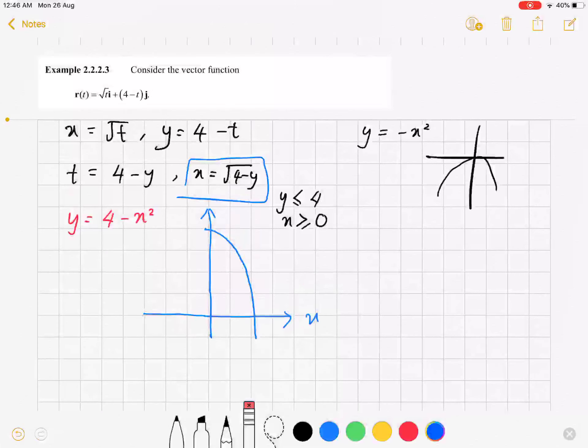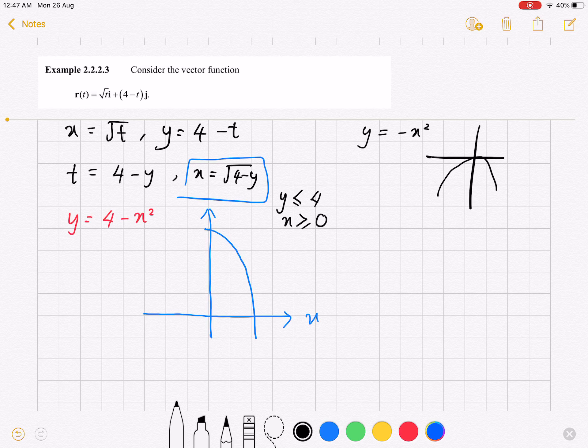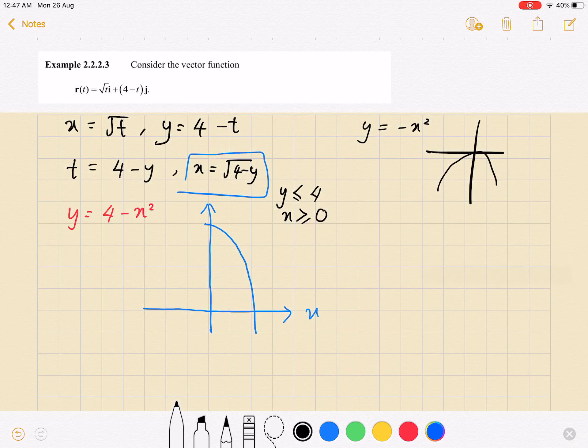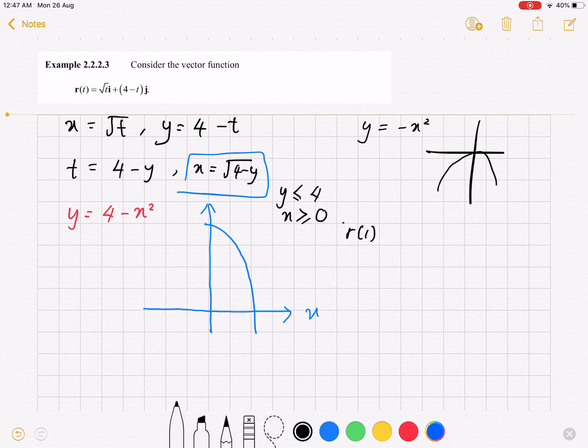We're done with that. So now, next question is find and sketch the position vector r in terms of t equals 1. r(1) meaning r(1). Substitute t equals to 1 into the vector. We will have i plus 3j.